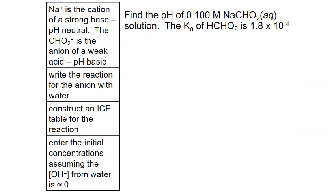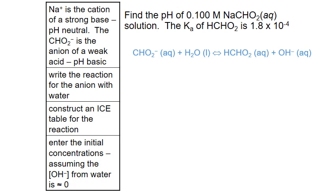Let's look at how we can use this relationship to calculate the pH of a salt solution of sodium formate, NaCHO2. When this salt dissolves in water, it produces a sodium cation and a formate anion. The formate anion is the conjugate base of a weak acid, formic acid. This means that the solution will likely be basic. To calculate the exact pH of this solution, we first write the reaction for the formate anion, CHO2, with water. The formate anion is a conjugate base, so it will extract a proton from water to form hydroxide ion and the corresponding acid, formic acid.